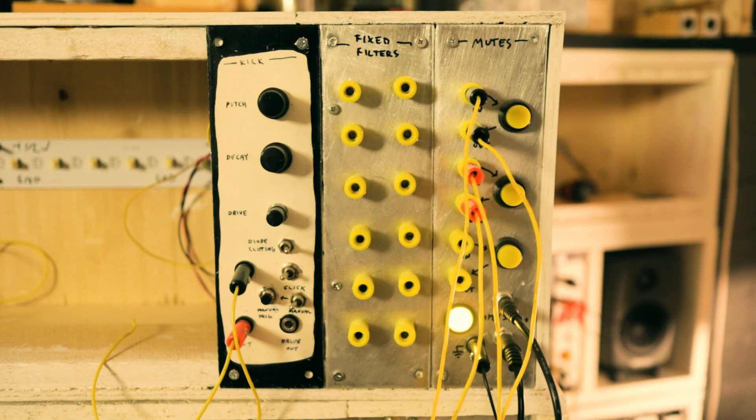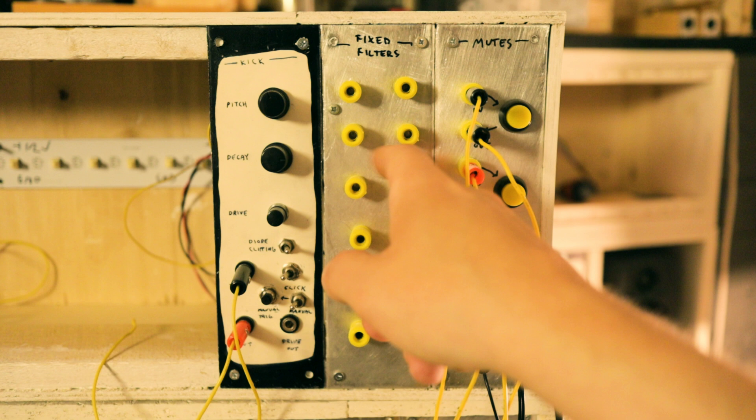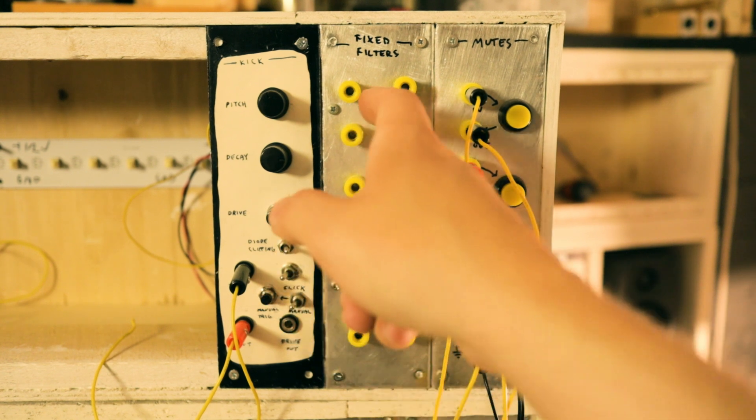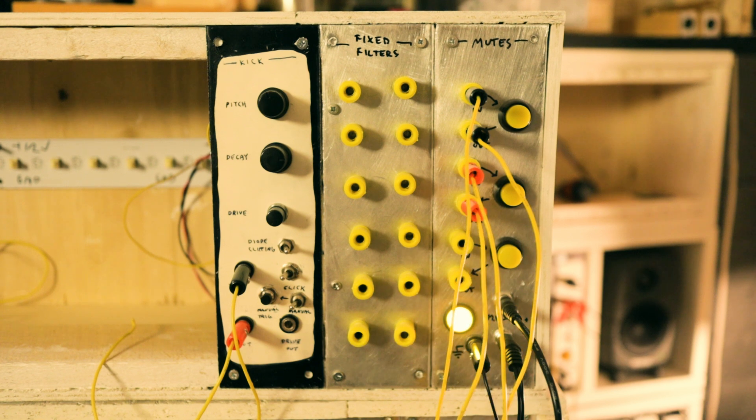Here it is. Here's the module. I still haven't written anything on the panel. I think it would be cool if it said the cutoff frequencies of the different filters, but I don't know the frequencies, so I don't know.